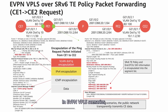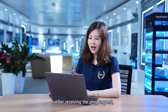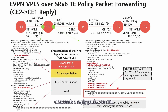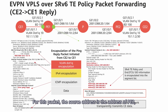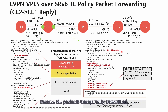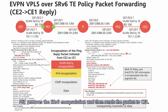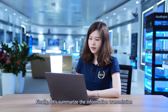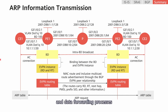In EVPN VPLS scenarios, the public network transparently transmits CE data. After receiving the ping request, CE2 sends a reply packet to CE1. The packet reaches PE1 through PE2. The source address is the address of PE2 and the destination address is the End.DT2U SID configured on PE1. Because the packet is transparently transmitted, the original data is carried. After receiving the packet, PE1 removes the SRv6 encapsulation and then sends the packet to CE1.